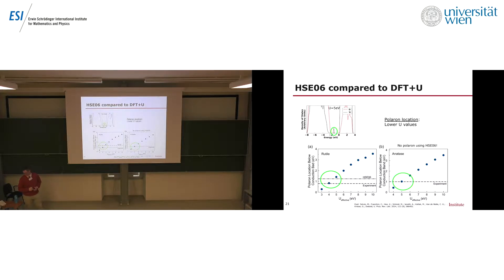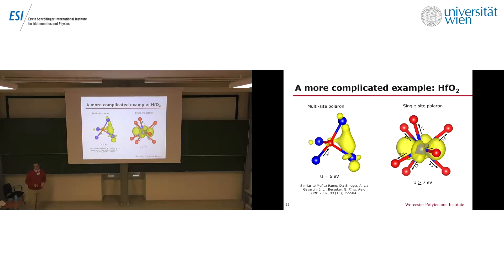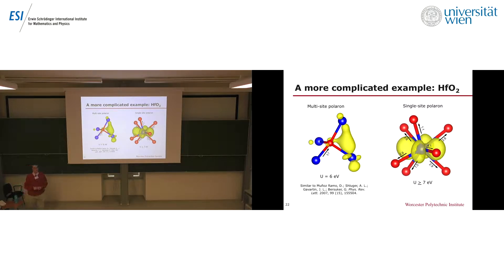Lower U-values are the results that tend to give polarons close in energy to either experiment or the hybrid functionals. Let me jump to a more complicated example: hafnium dioxide. It's much more complicated — if I apply a U-value of 6 eV, I get a polaron solution spread between multiple atoms, but with a U-value of 7 or higher, I get a polaron localized to only one particular hafnium atom. This multi-site polaron has been observed by Alex Schluger and colleagues, who have done a lot of work with hafnium dioxide.